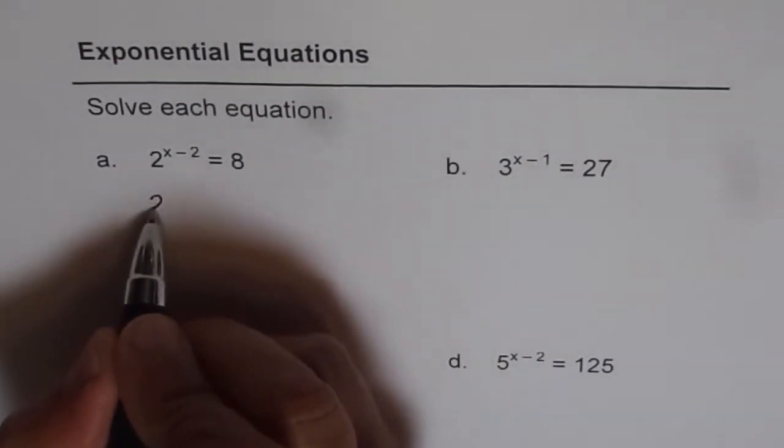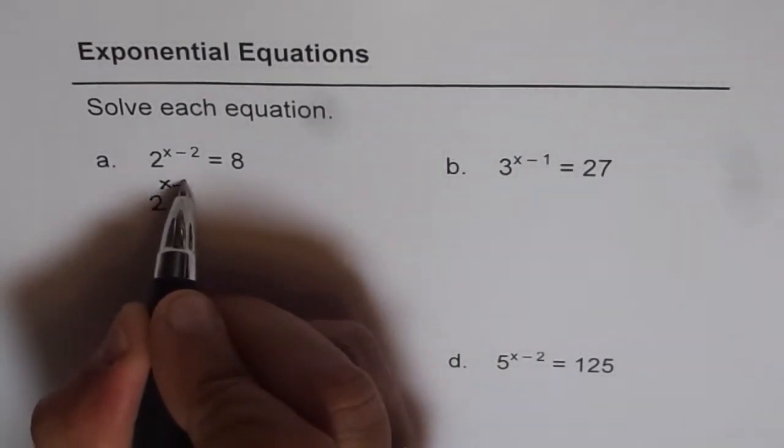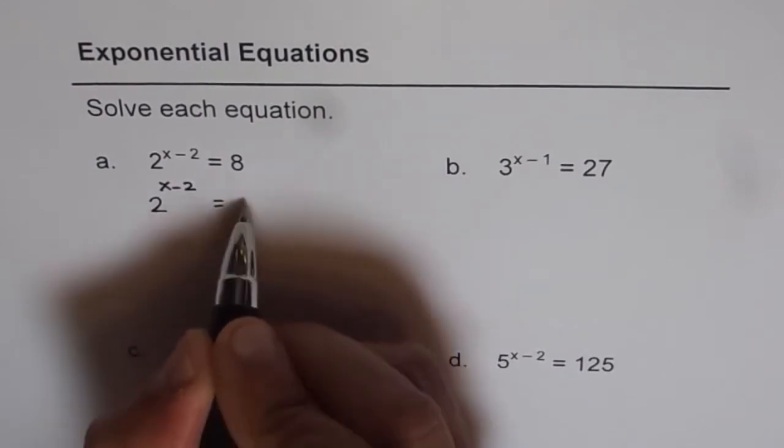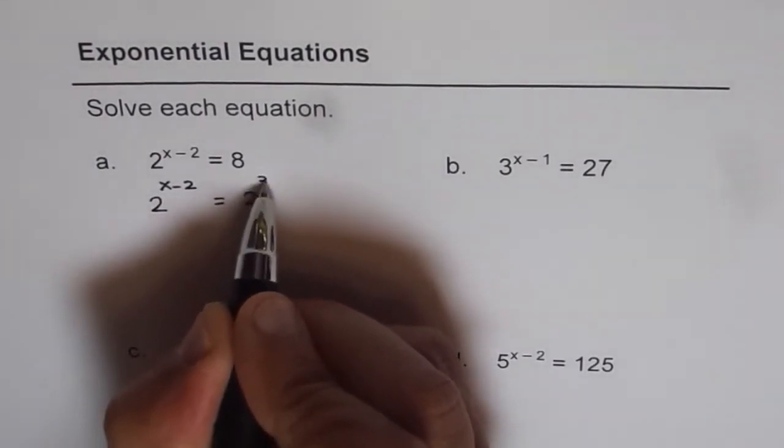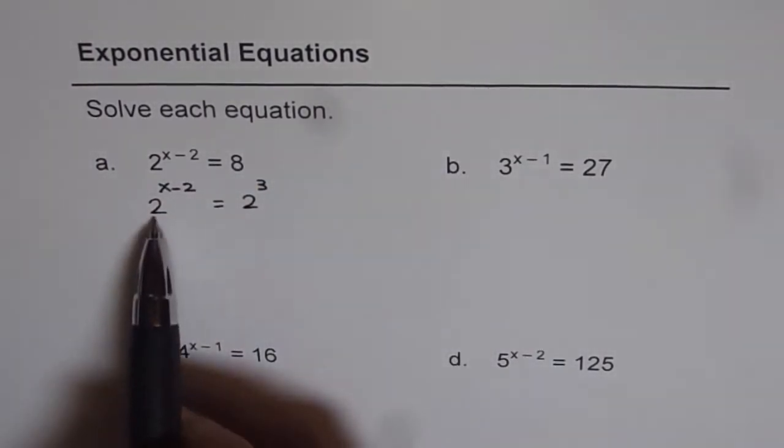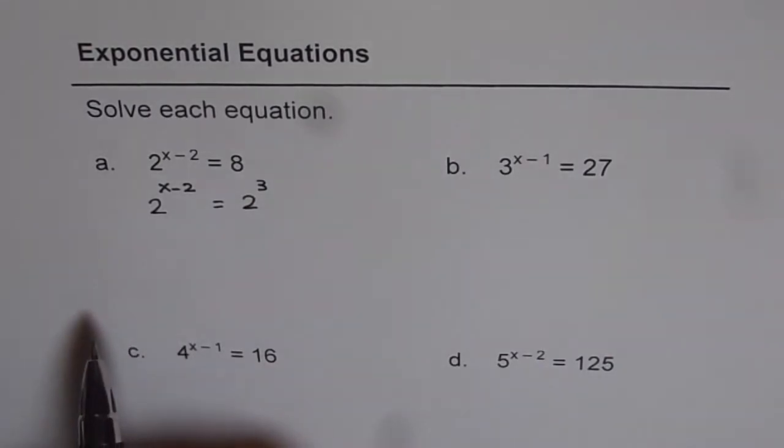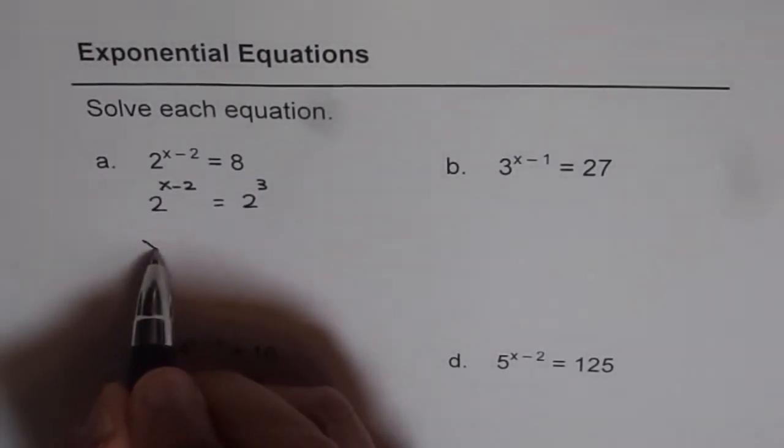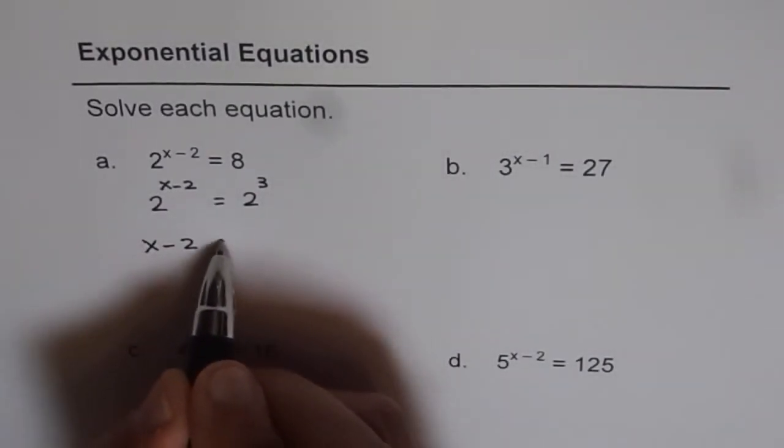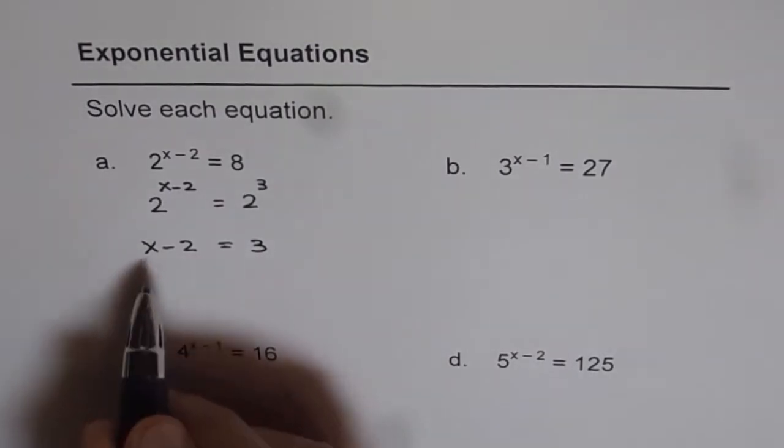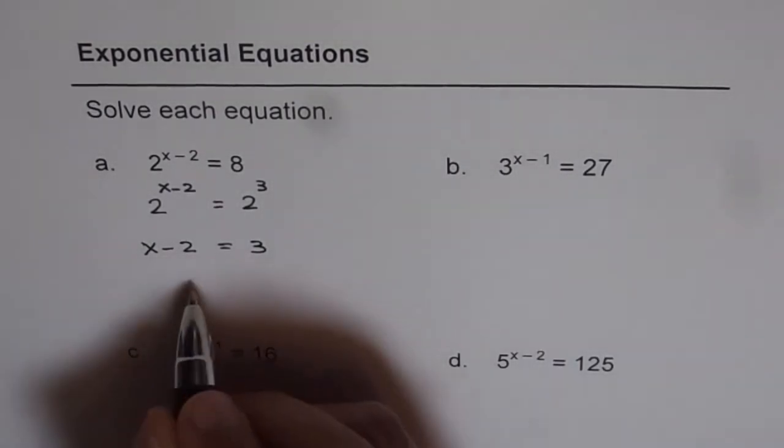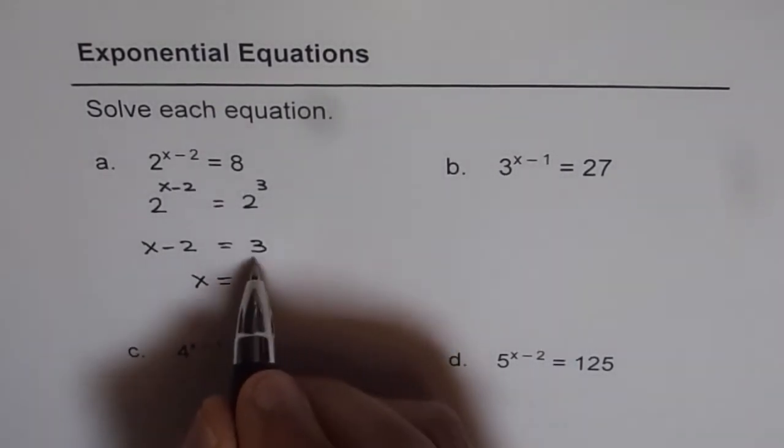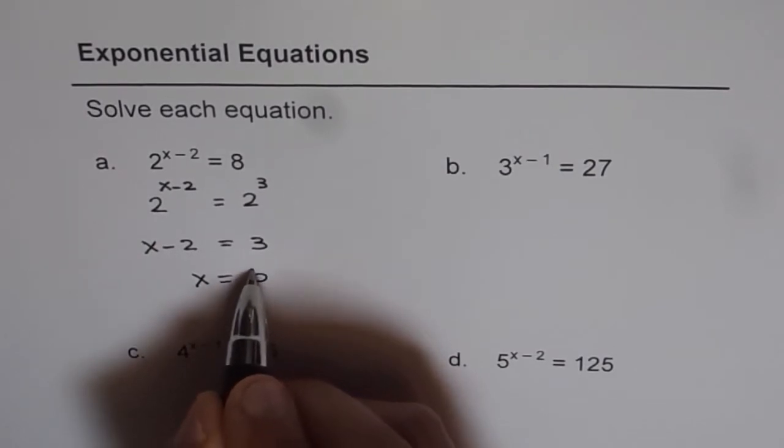So let's rewrite this equation as 2 to the power of x minus 2 equals 2 to the power of 3. Now since the base is the same, exponents should also be the same. They should be equal. And therefore we can write x minus 2 equals 3. And now we can solve for x. x is equal to 3 plus 2 that is 5.